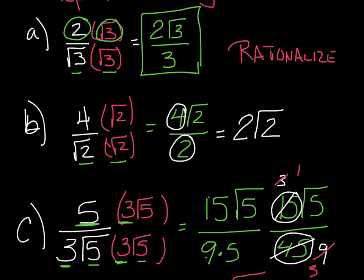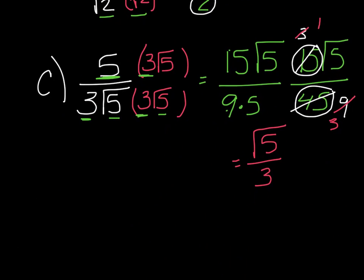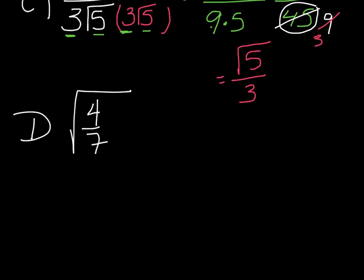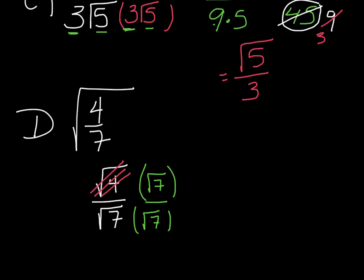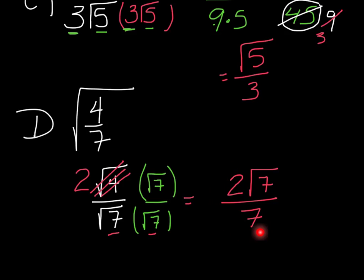Let's try one last one: the square root of 4/7. On day 1 of radicals, we said we can rewrite that as radical 4 over radical 7. You can't leave a radical on the bottom, so I'm going to multiply the top and bottom by radical 7 — it's like really multiplying by 1. The square root of 4 is just 2, so on top I get 2 radical 7, and radical 7 times radical 7 is just 7. This 2 and 7 cannot be simplified, so I'm done.